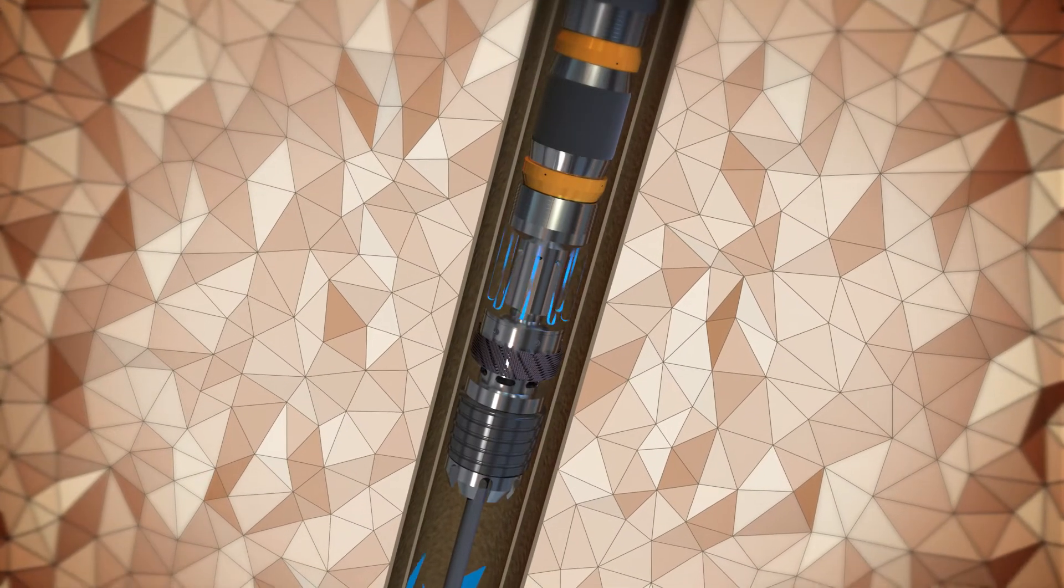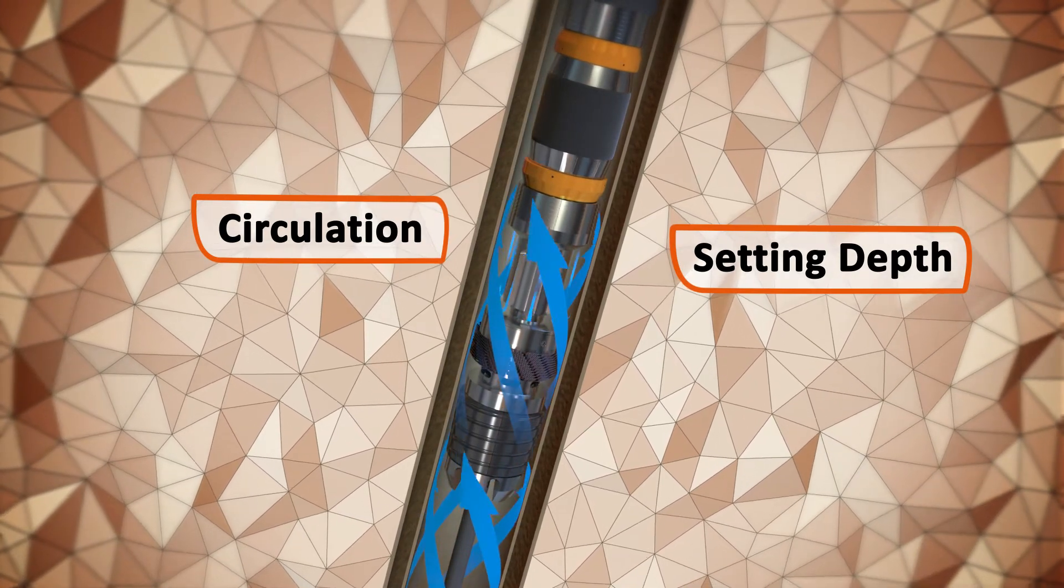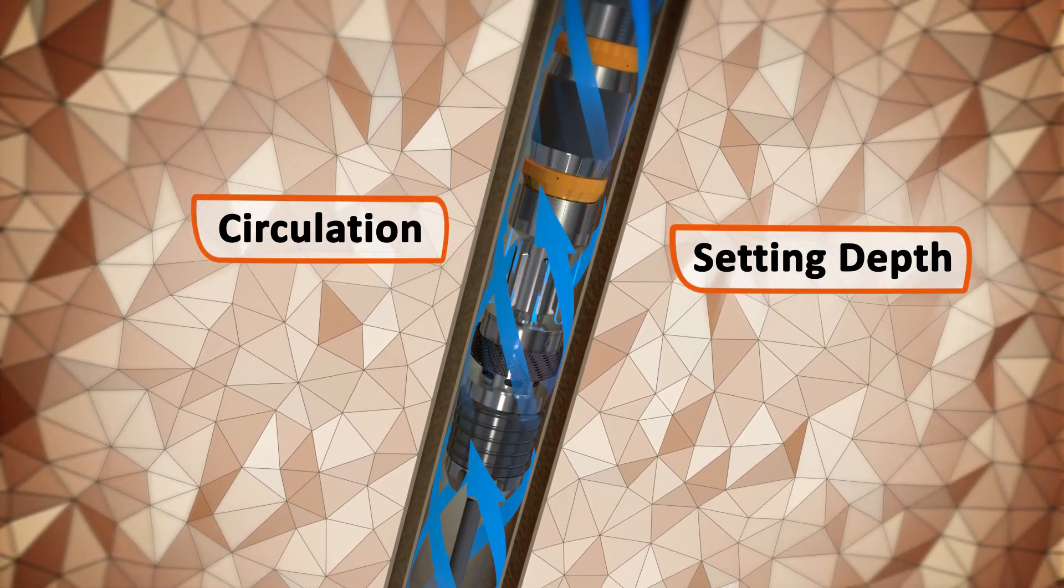Once at the setting depth, circulation through ports at the bottom of the sliding valve helps remove debris from the wellbore.